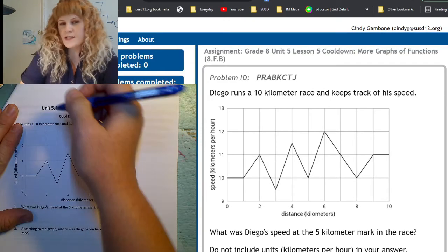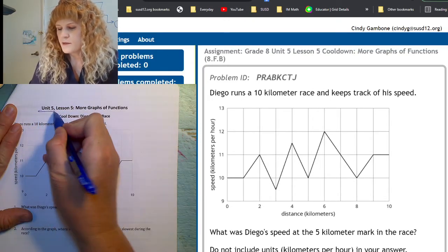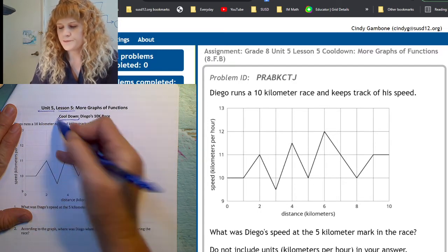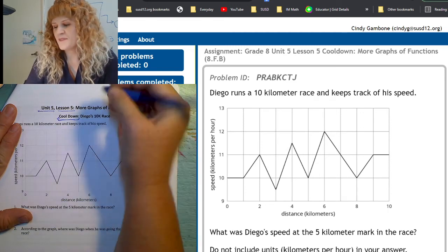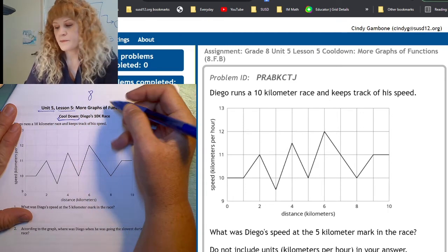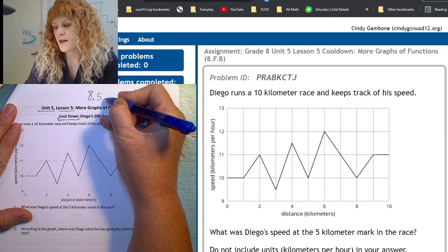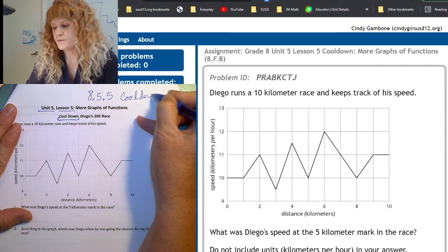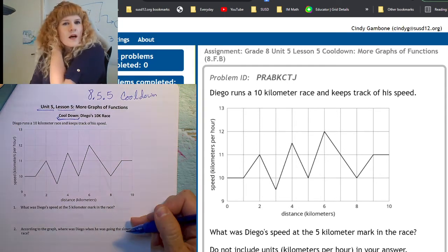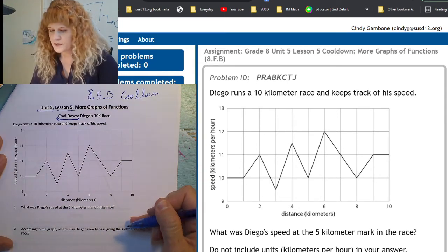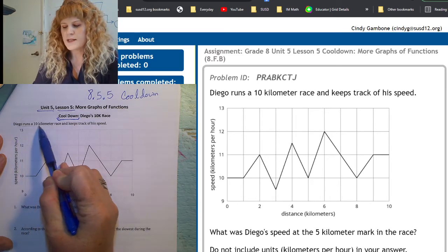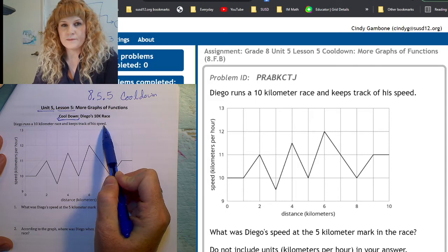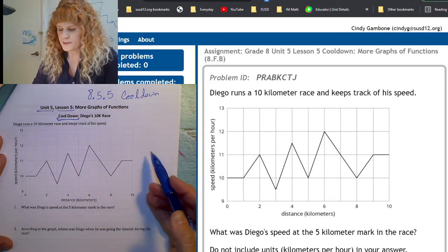Hello students! Let's get to work. This is Unit 5 Lesson 5 Cooldown. In Google Classroom you'll see 8.5.5 cooldown. Let's take a look here. Diego runs a 10-kilometer race and keeps track of his speed. And here's a graph of that speed.